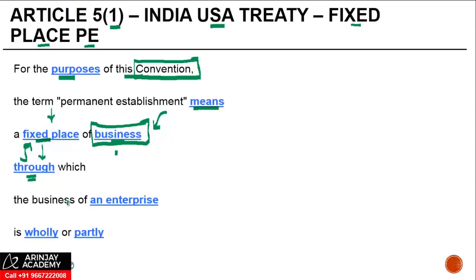The phrase 'the business of the enterprise' is important. The word 'and enterprise' signifies that when you are looking at the concept of a P.E., you have to look at it entity by entity. You cannot say that because 10 foreign companies share an office, that office will be construed as a P.E. of all 10 companies. No — you need to see it on an entity-by-entity basis. The concept of a group P.E. is not recognized in India, at least until now.